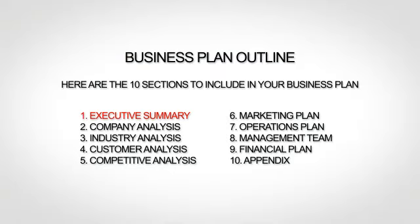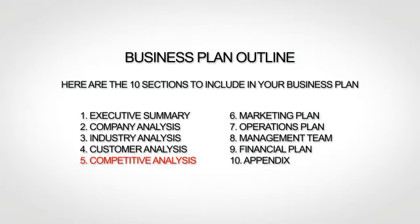The first section is your executive summary, which is essentially the introduction to your business plan. The next section is your company analysis, which gives a little more background. Next up is your industry analysis, where you talk about your market and trends. The fourth section is your customer analysis, where you go more in-depth about your target market. The fifth section is your competitive analysis, where you provide an analysis of your competition, including what differentiates you from your competitors.